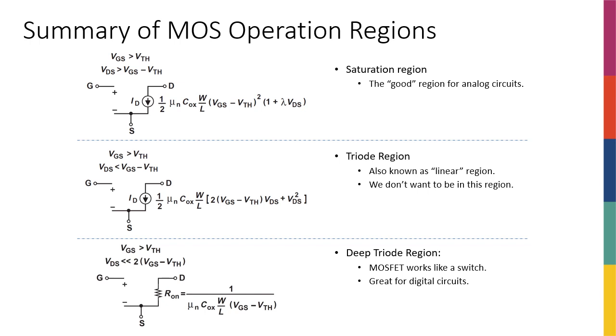If VGS is less than VTH, then I don't have any channel, so therefore no channel. You can say that you're in the off region. But then if the transistor is on, so this is the condition to be on.